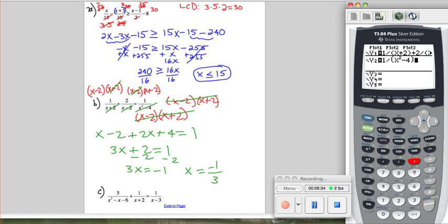And then under y2 you put 1 divided by x squared minus 4. When you graph it, you see the graphs of these two equations, and their intersection is right here at negative 1 third. It's not so easy to see it on this screen, but when I did it on my own calculator at home, I was able to see it better.